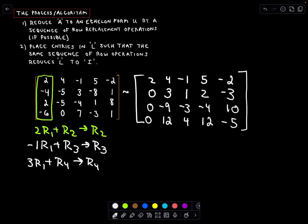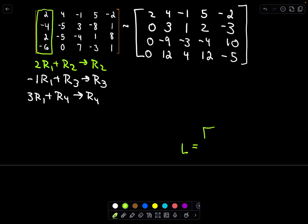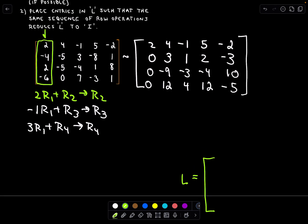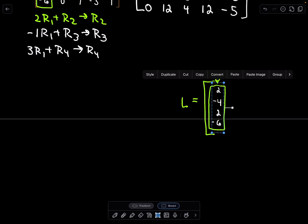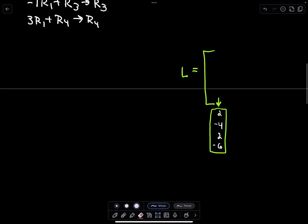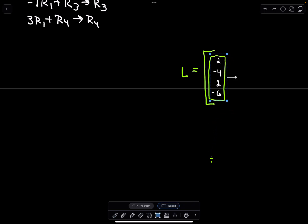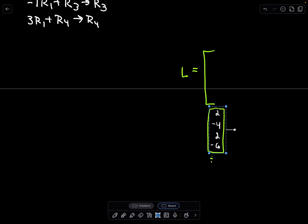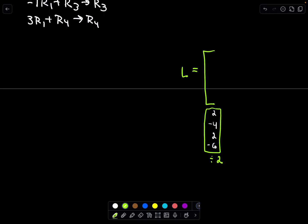At this point we keep going because we still want to put this in echelon form. But I can also start working on matrix L, so I'll build it up as we go along. We look at that first column of entries. We don't just drop those in there, because we need 1s along the diagonals. We take the entry that falls along the main diagonal — in this case a 2 — and divide every number in that column by 2. So 2 divided by 2 is 1, negative 4 divided by 2 is negative 2, 2 divided by 2 is 1, and negative 6 divided by 2 is negative 3.